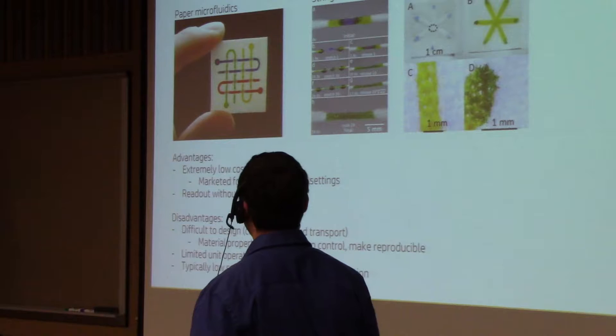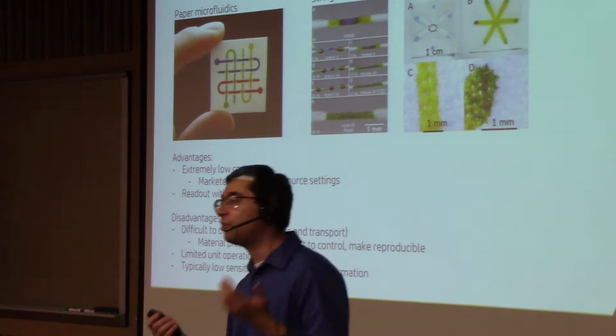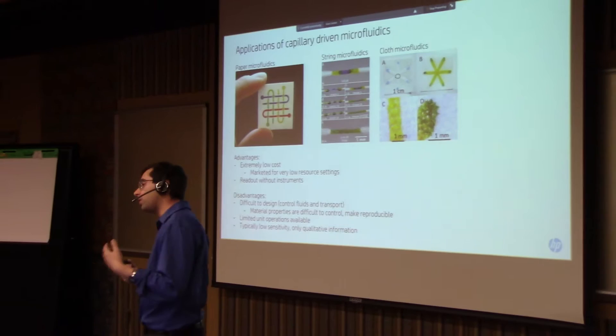Now, for things like the pregnancy test, you usually just need yes or no answer. You cannot really be half-pregnant or quarter-pregnant. So that's usually good enough. But if you want to try to measure an analyte and determine on that, like how sick somebody is, and should we provide treatment now versus treatment later, we triage the person, it makes it fairly difficult.